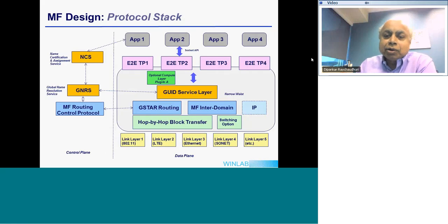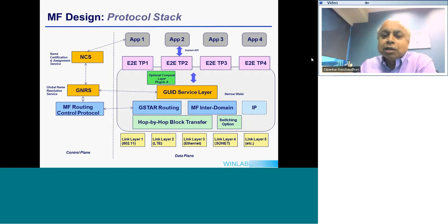The basic protocol stack we have come up with looks somewhat like an internet stack, and you can actually fit IP into it. The blue boxes represent our IP routing equivalent function, which we call G-star — standing for General Storage Area Routing. MF interdomain is the new interdomain protocol we are using, and you could substitute IP in there if you want by giving up some functionality. Below that, just like the internet, we support a variety of link-layer protocols. Above that you can have different transport layer protocols — one difference is that the transport layer does not need the same features as TCP, because we have reliable hop-by-hop block transfer in the basic architecture.